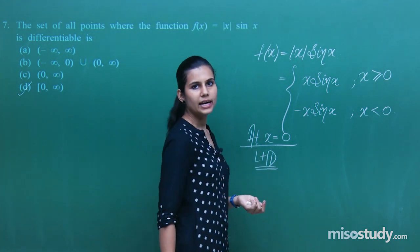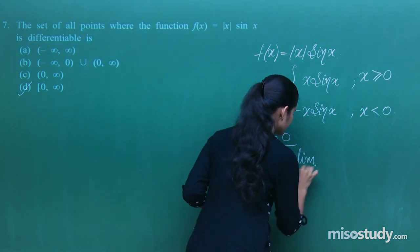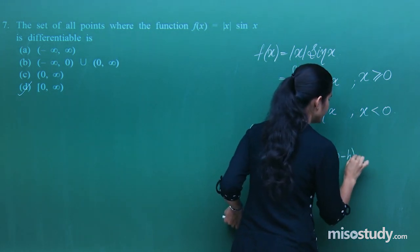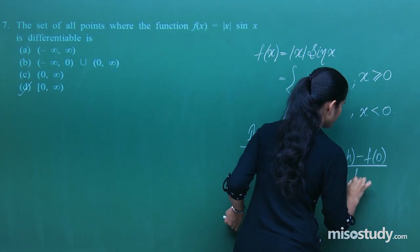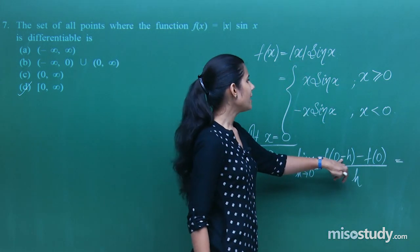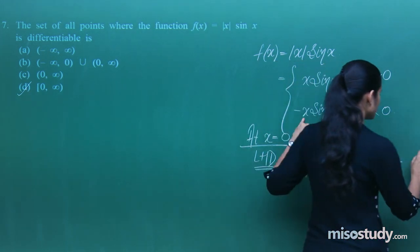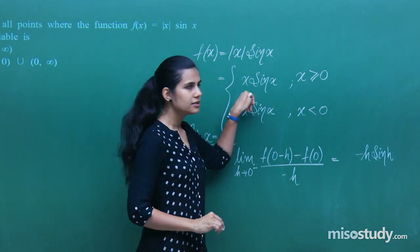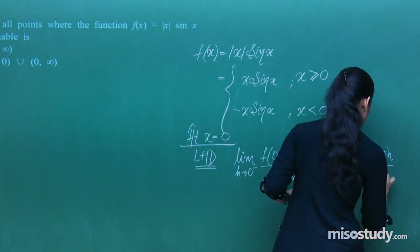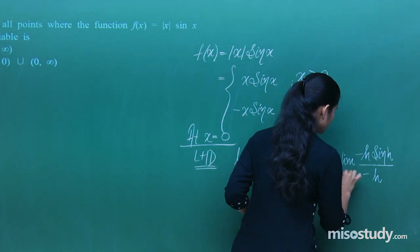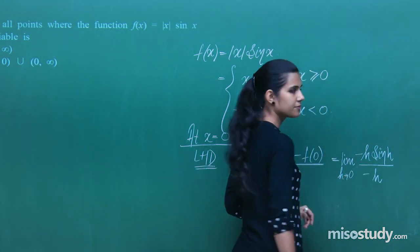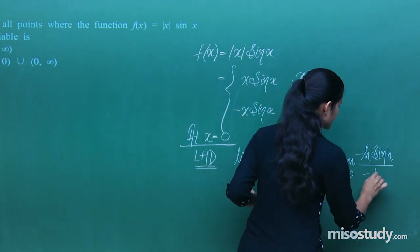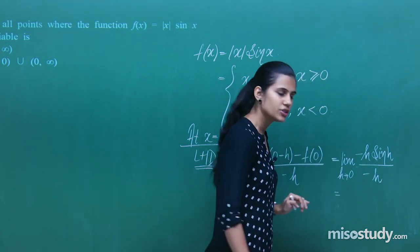Left-hand derivative at 0: limit h→0⁻ of [f(0−h) − f(0)] / (−h). f(0−h) = −(−h)·sin(−h) = −h·sin h (using the negative branch), and f(0) = 0. This simplifies to limit h→0 of (−h·sin h)/(−h) = limit h→0 of sin h = 0.